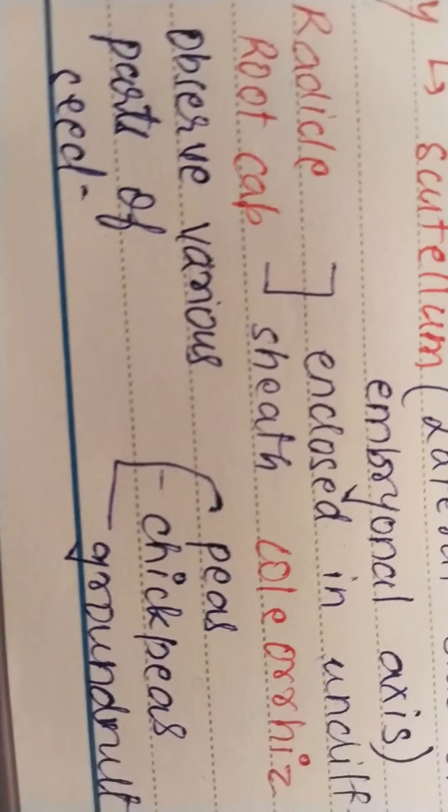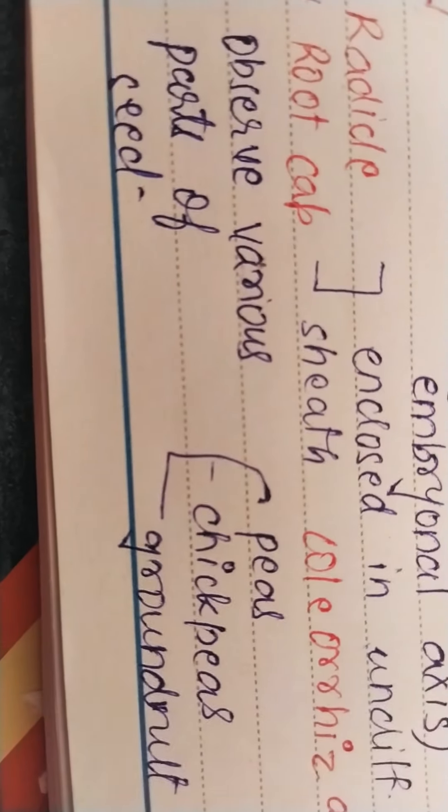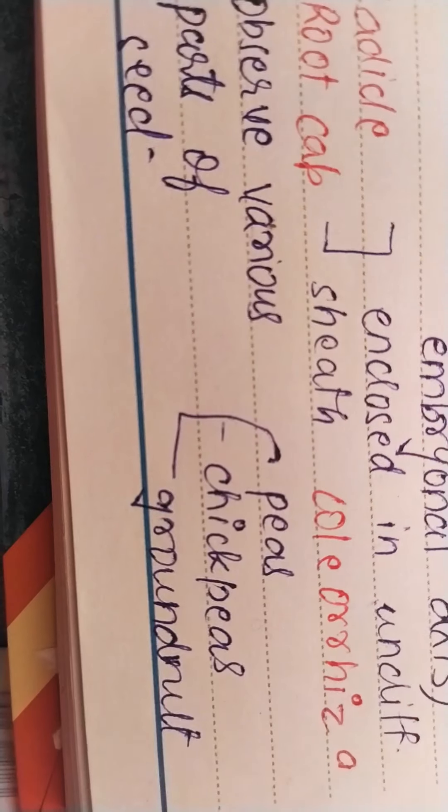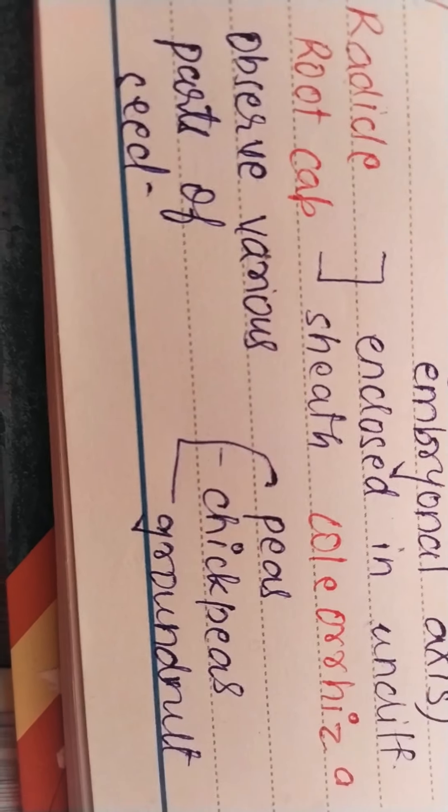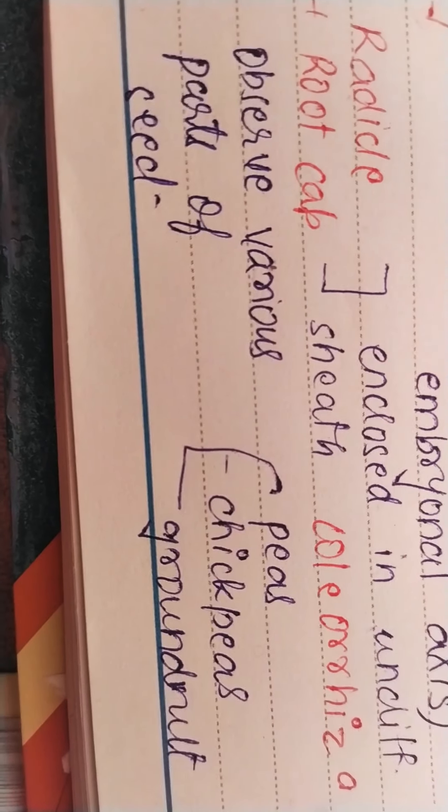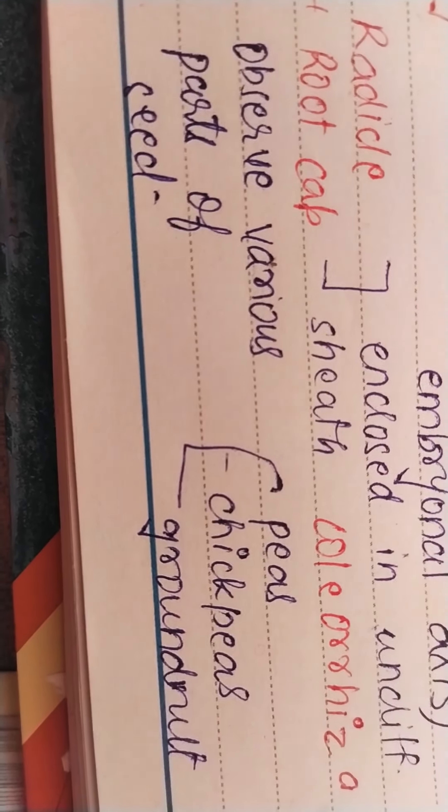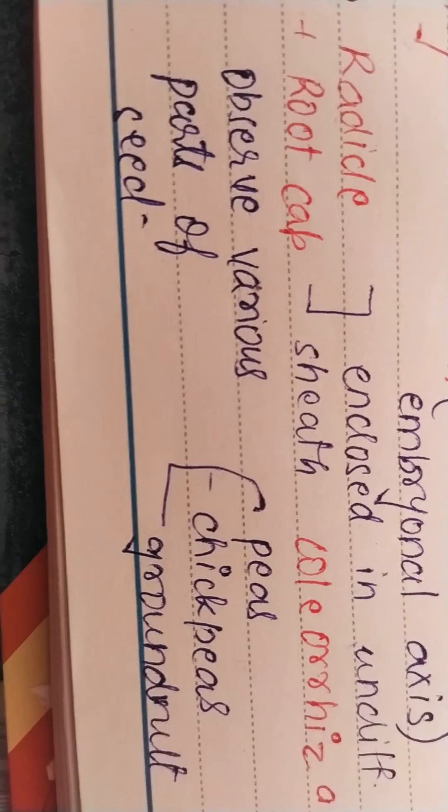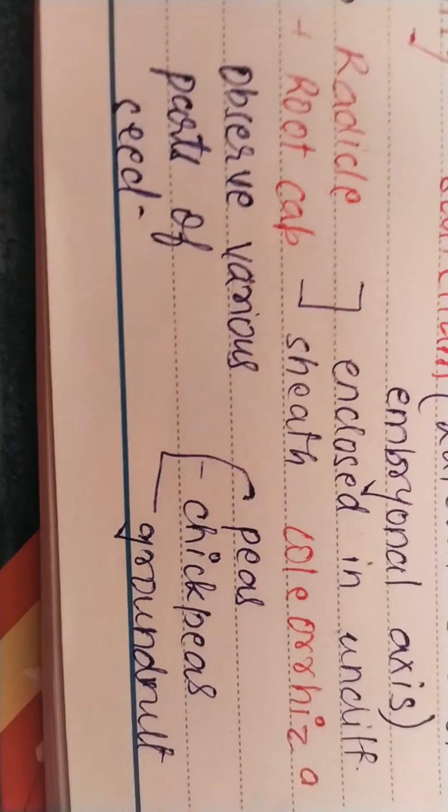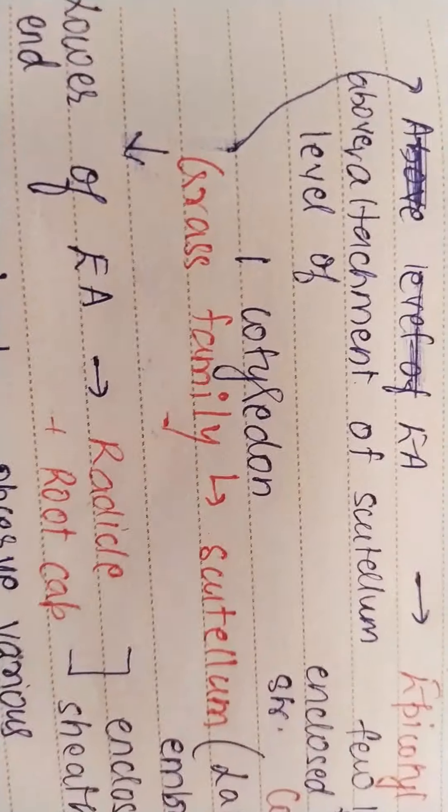So radicle and root cap are actually protected by the cells which will further differentiate into root system. In the undifferentiated stage they are known as coleorhiza. Remember, embryogenesis will include cell division and cell differentiation.